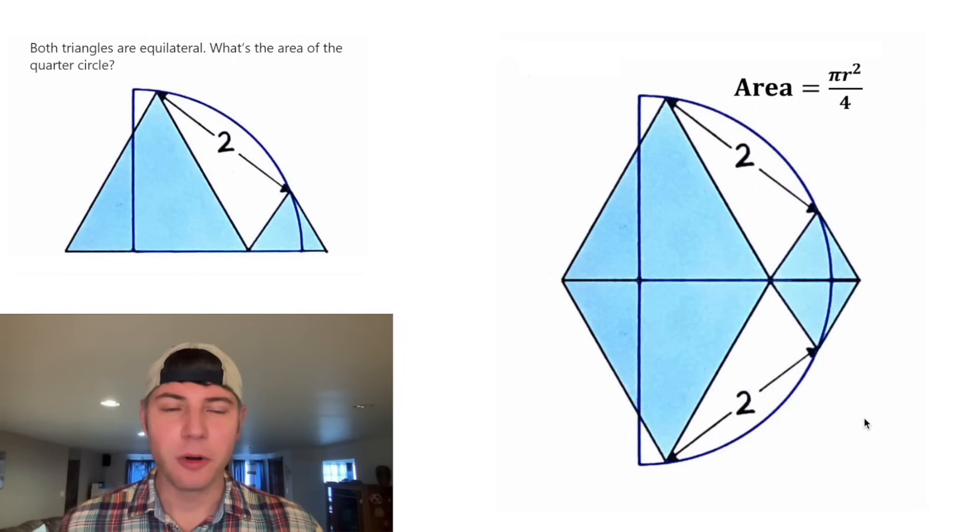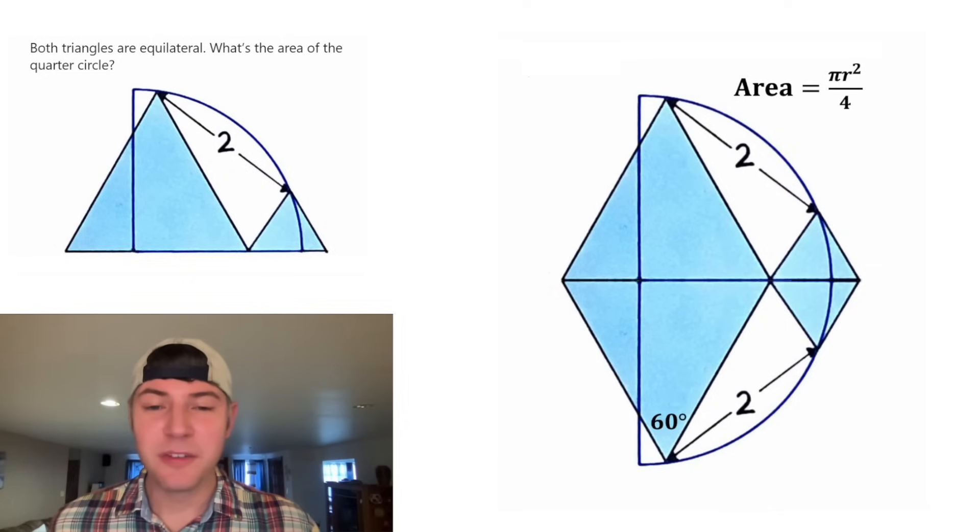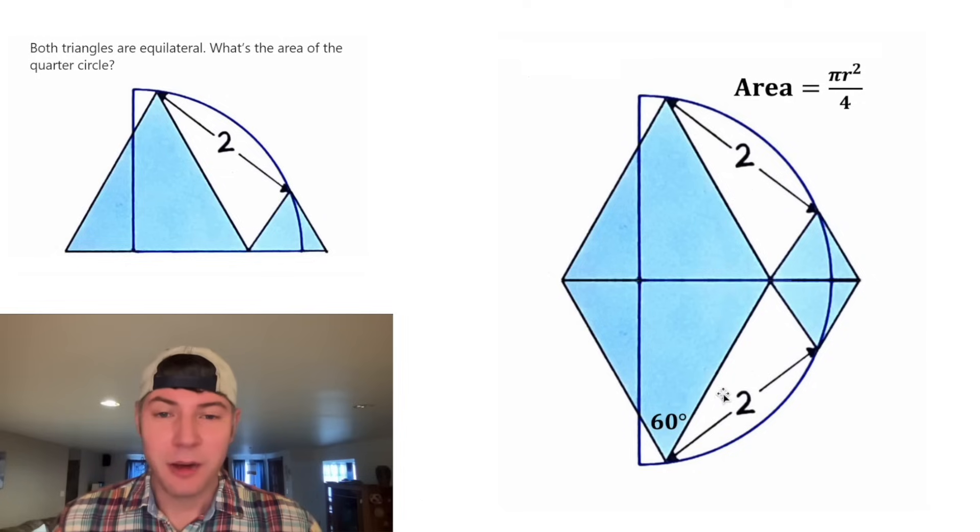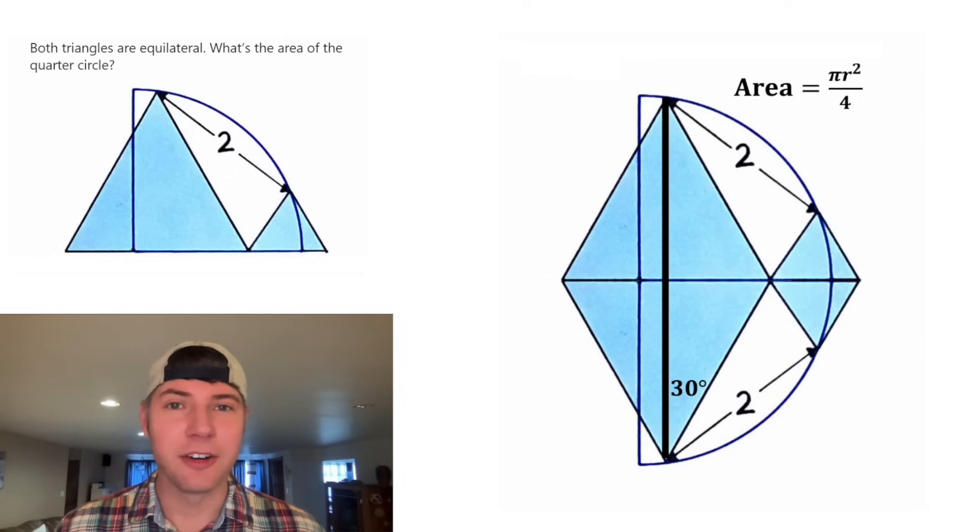I'm thinking let's reflect the whole image down here. So now we have a semicircle and four of these equilateral triangles. In equilateral triangles, all the angles are equal to 60 degrees. I'm specifically interested in this angle right here. And we can cut this 60 in half by bringing down this segment right here. And it'll cut this angle into 30 degrees.